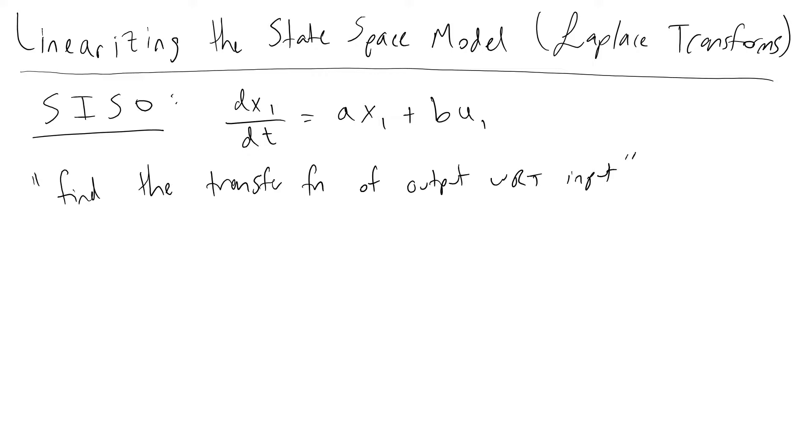And so the output in this case will be y, y is the generic term that we denote our output as, and y in this example will be equivalent to x1, and our input here will be u1, and we only have a single input and a single output.